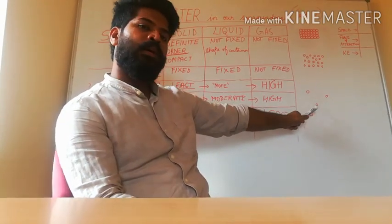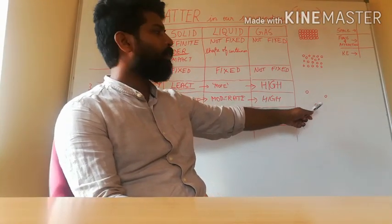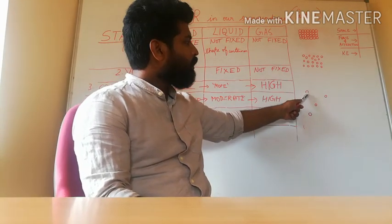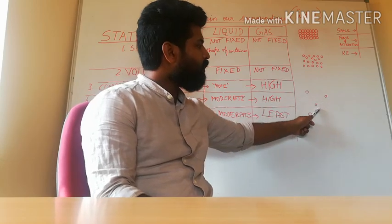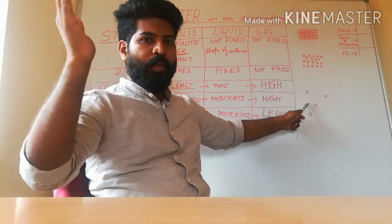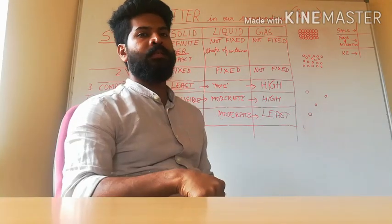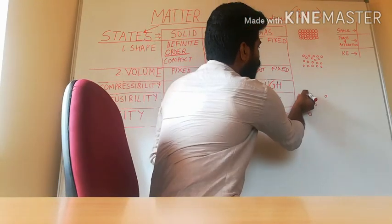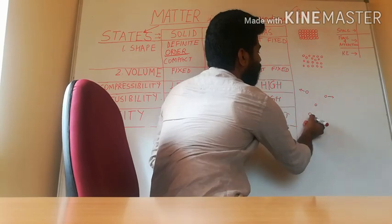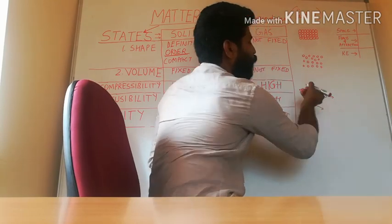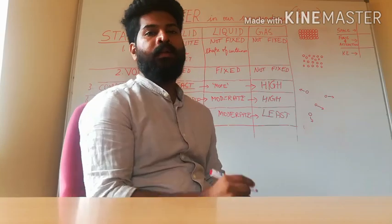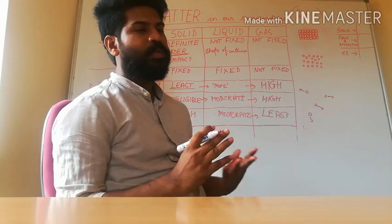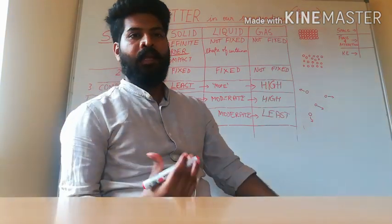Why are certain forms of matter present as gases? Because the inter-particle space is very high, due to which the force of attraction is very less, so particles can freely move randomly wherever they want. They have high kinetic energy, so they don't have a particular boundary or a particular shape. That is why they are present as gases.